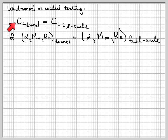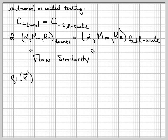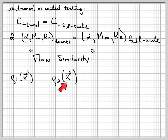This idea is more general than that — it's true for any non-dimensional quantity. The more general idea is called flow similarity. If I have the same non-dimensional input parameters between two flows, then the flows will be similar. Any quantity appropriately non-dimensionalized will be equal to the corresponding quantity in the other flow. For flows one and two to be similar, they need the same alpha, Mach number, Reynolds number, and same geometry.